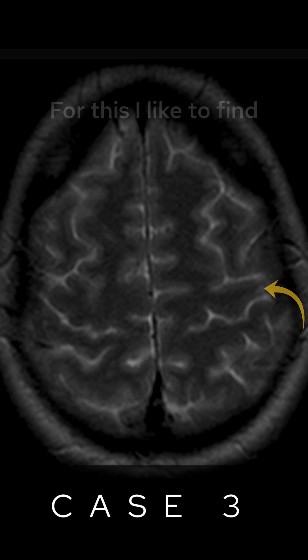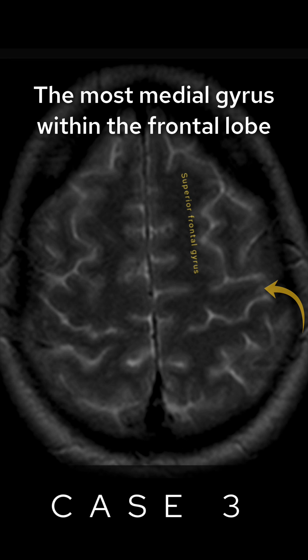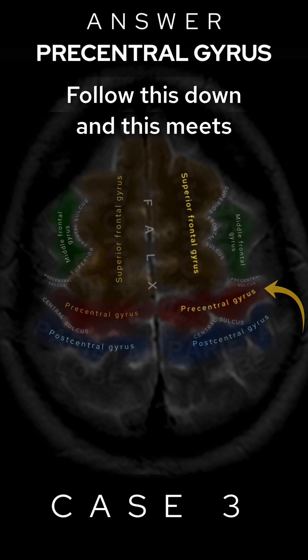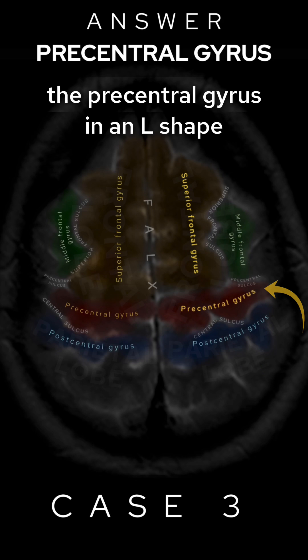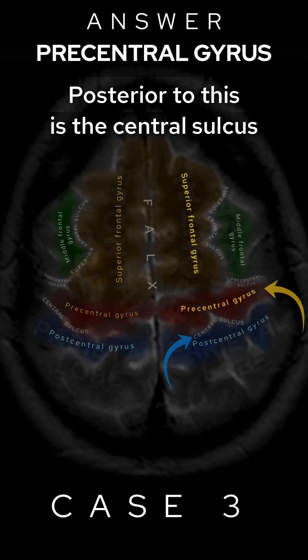For this, I like to find the superior frontal gyrus — the most medial gyrus within the frontal lobe. Follow this down and it meets the precentral gyrus in an L shape, which is the site of the primary motor cortex. Posterior to this is the central sulcus.